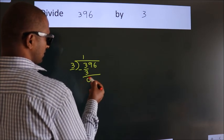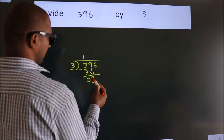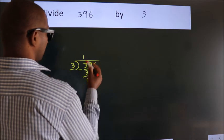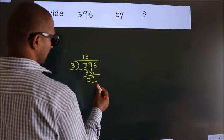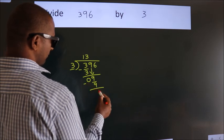After this, bring down the beside number. So 9 down. So 9. When do we get 9? In the 3 table: 3 threes is 9. Now we subtract. We get 0.